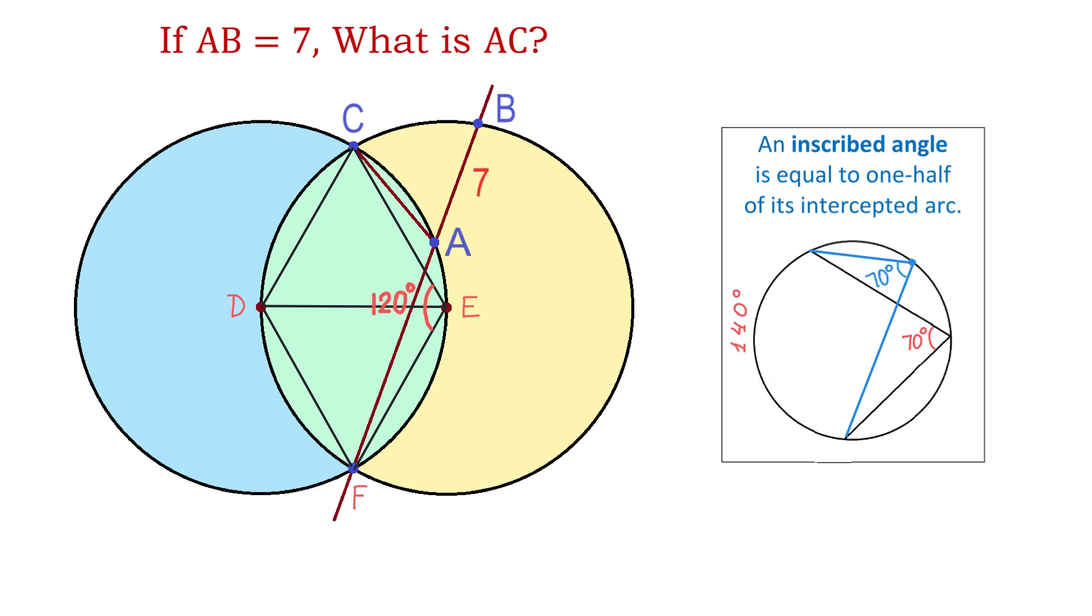Now, let's go back to our problem. The angle CEF is an inscribed angle in the blue circle. This angle intercepts this arc, and if the measure of this angle is 120 degrees, then the measure of this arc will be twice 120, which is 240.